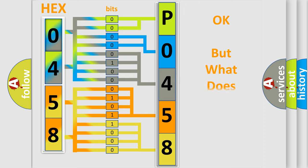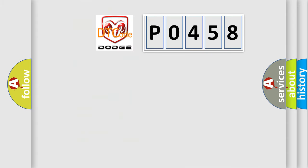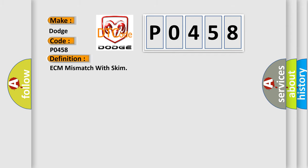We now know in what way the diagnostic tool translates the received information into a more comprehensible format. The number itself does not make sense if we cannot assign meaning to what it actually expresses. So, what does the Diagnostic Trouble Code P0458 interpret specifically for Dodge car manufacturers? The basic definition is ECM mismatch with SCIM.